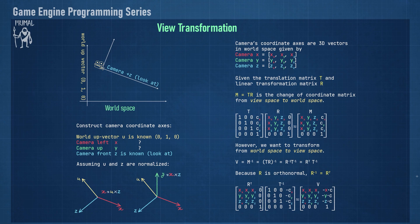To do this, we first need the inverse of our translation matrix, which is easily done by negating each offset. For the linear transformation matrix, we know that it was constructed using orthogonal unit vectors which form the camera axes. Therefore, this matrix is an orthonormal matrix. Orthonormal and orthogonal matrices can be inverted simply by transposing them. Now that we have both inverse matrices, we can multiply them to get the world-to-view transformation matrix.